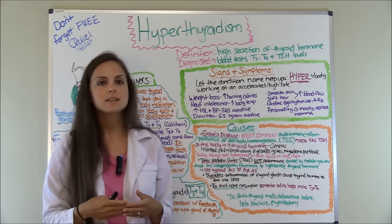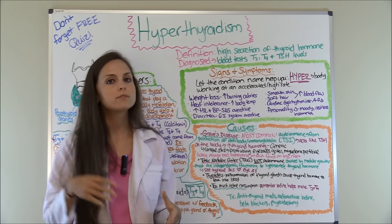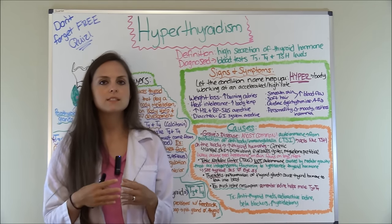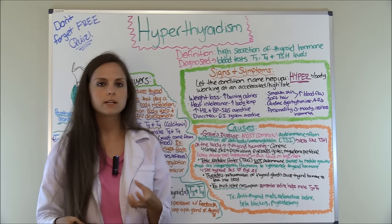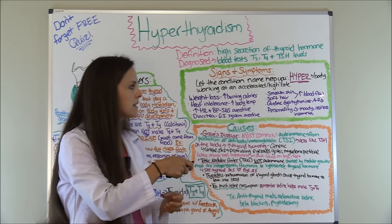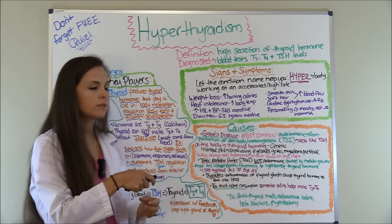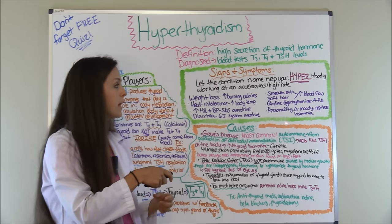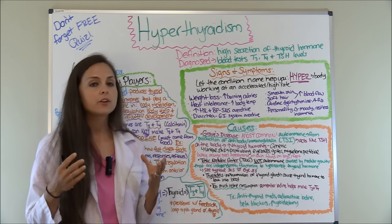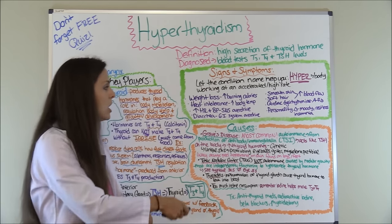They'll have diarrhea because the GI system is in overdrive, shooting food through the intestines — which also contributes to weight loss because food flying through the intestines doesn't allow enough time to absorb nutrients. They're also going to have smooth hair and soft skin due to increased blood flow. They're at risk for cardiac dysrhythmias like atrial fibrillation, and personality changes — they're really wired, moody, restless, irritable, and have problems sleeping at night with insomnia.